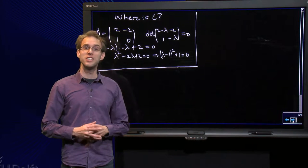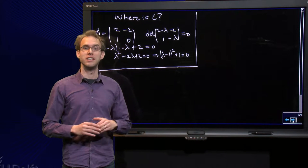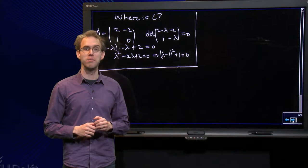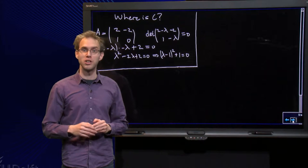We now know how a C-matrix acts on vectors. It rotates them about an angle equal to the argument of lambda and scales them by a factor equal to the modulus of lambda.